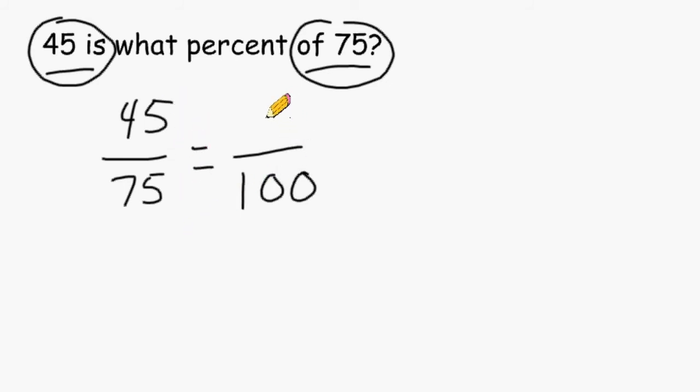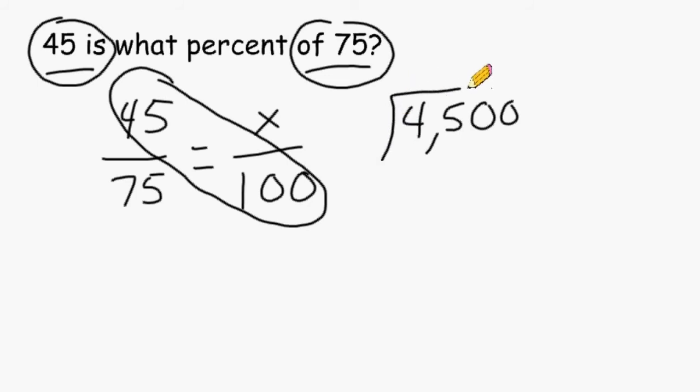So let's stick an x for a variable in that position. And then we start by multiplying 100 times 45, which would be equal to 4,500. And then we take that product, and we divide it by 75.